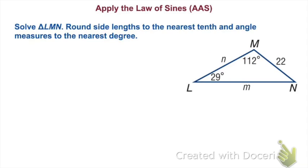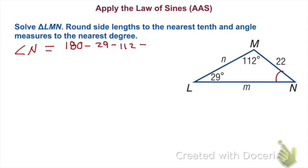So we have this triangle. We've got a set — solve triangle LMN. Round side lengths to the nearest tenth and angle measures to the nearest degree. The first thing I'll look at is what's the easiest thing to solve for. We are given two angle measures, so we need angle N. That's going to be the easiest — triangles have 180 degrees, so we just subtract the two given angles: 180 minus 29 minus 112. Angle N is 39 degrees.